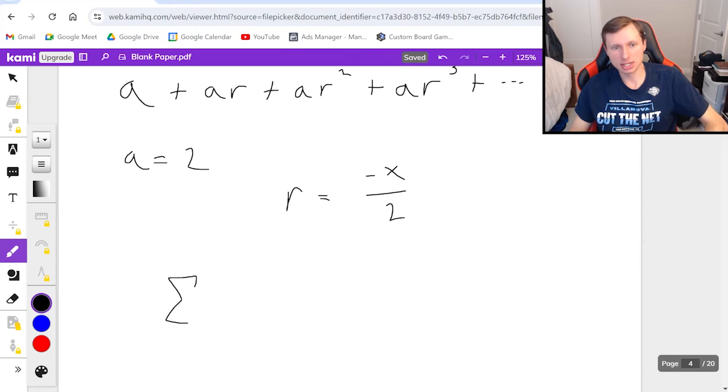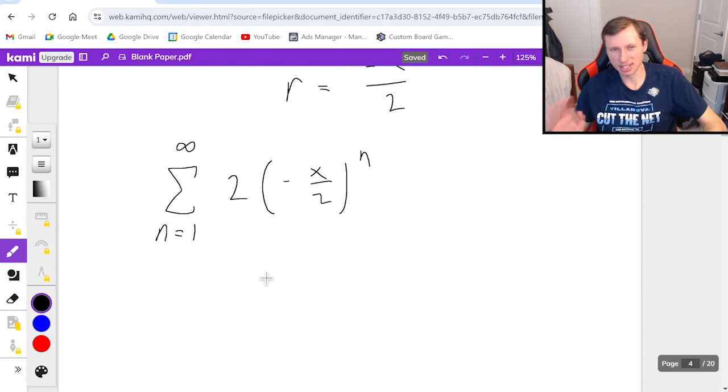So now the series is equal to n equals 1 to infinity of 2 times negative x over 2 to the nth power. And if I want to find the interval and the radius again, you should probably try it on your own at this point. I think you can do it. So pause the video, give it a try, and unpause it when you're ready to see my solution.